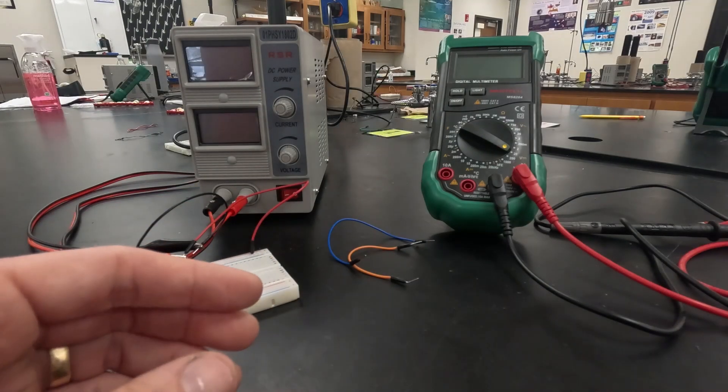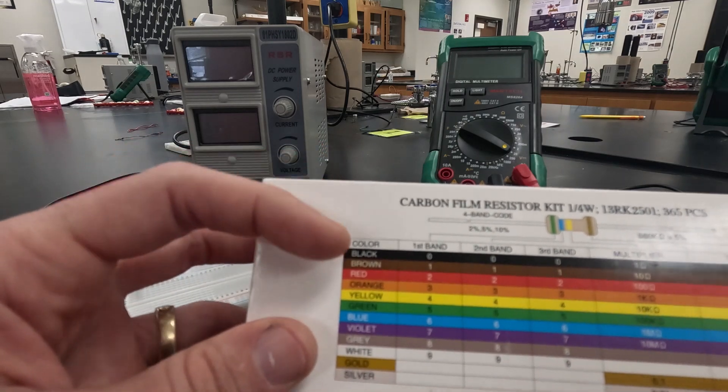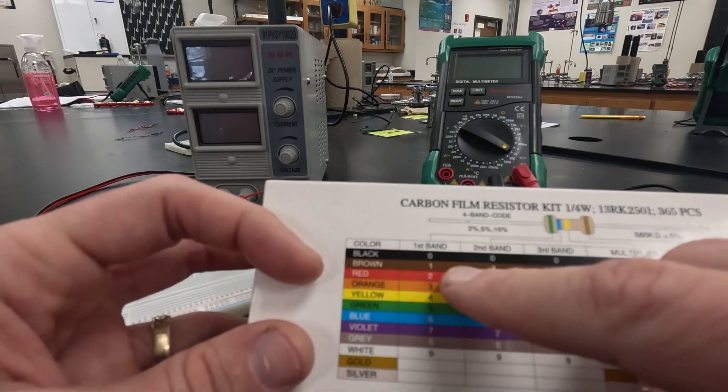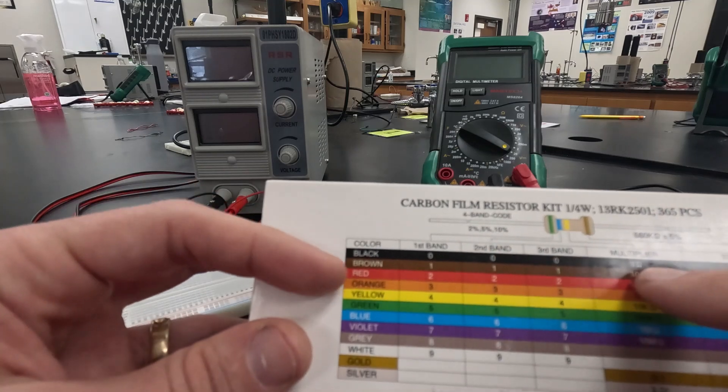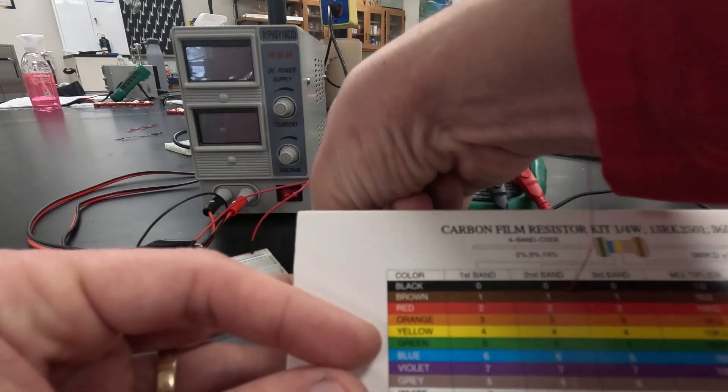To get going we need five different resistors. Starting at the beginning is 100 ohms. We're going to do 1, 0, and times 10. So brown, black, brown. That's our first resistor we're going to use.